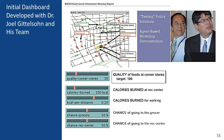The second slider is the calories burned at recreational centers when children visit. The third is the calories burned per distance for walking. The fourth is the probability that a child would visit a grocery store, and the fifth is the probability that the child would visit a recreation center.